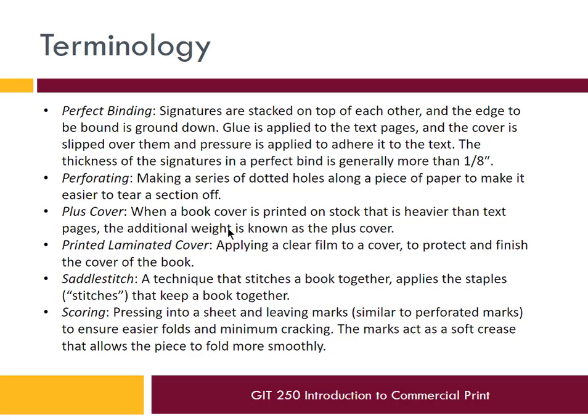Perfect binding is a very common form of binding. Signatures are stacked on top of each other and glue is applied to the pages — a fairly simple process, though you're limited in how many pages can go into each signature, so multiple signatures are bound together to make longer documents. Saddle stitching is basically stapling the spine of the book. We already talked about scoring.